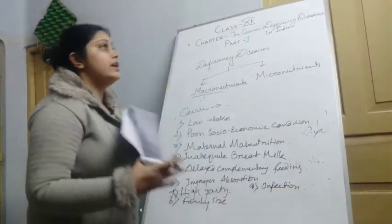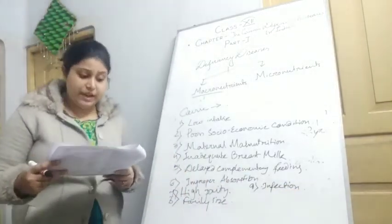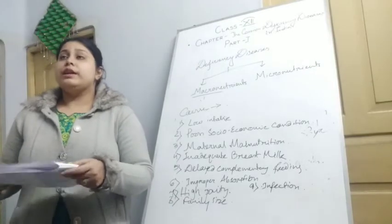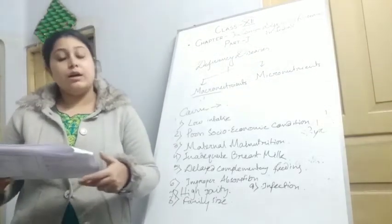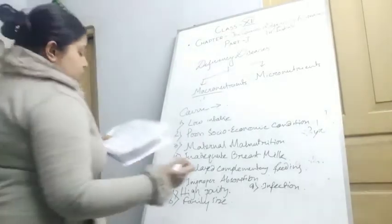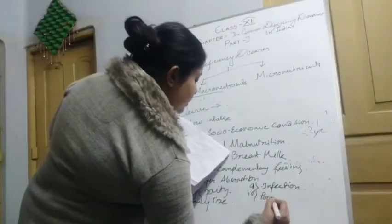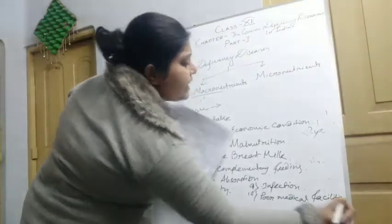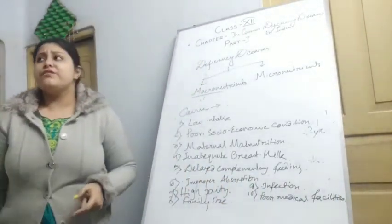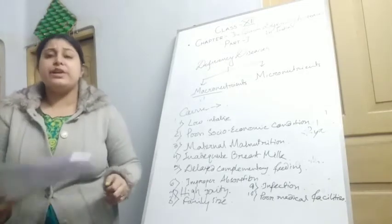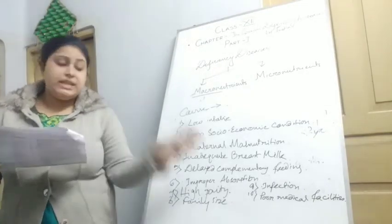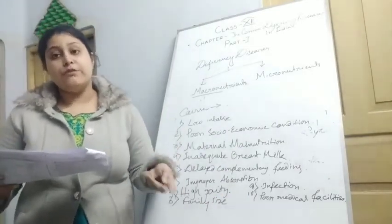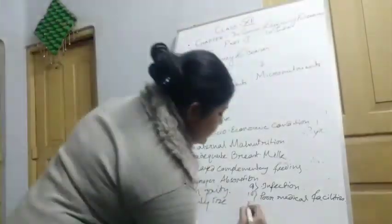The ninth cause is infection. If the child is not protected from viral diseases or bacterial infections, or if they are not vaccinated properly, PEM can occur. The tenth is poor medical facilities. Mainly in slum areas and very rural areas, medical facilities are not adequate, so the child can become a sufferer of PEM.